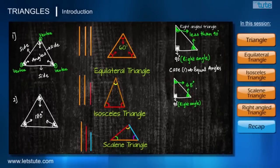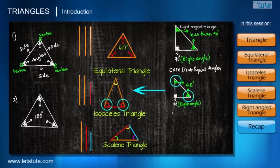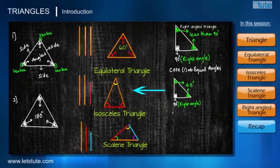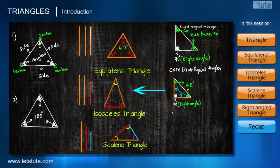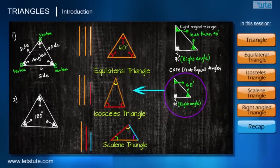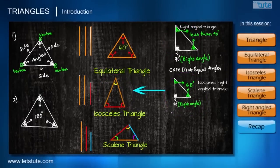When two angles are equal, it follows the property of an isosceles triangle, where the sides opposite to equal angles will also be equal. So this triangle follows the property of both an isosceles triangle and a right-angled triangle. Such triangles are called isosceles right-angled triangles.